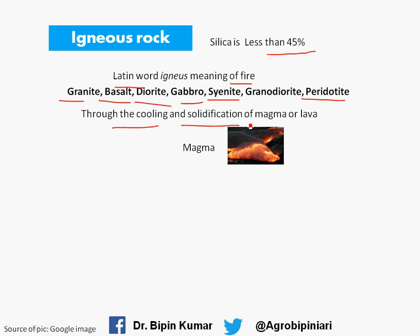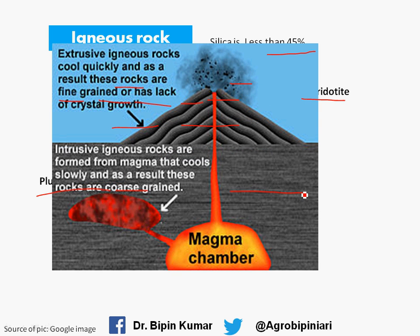When magma cools and solidifies, it forms igneous rocks. There are two types based on the position of formation. First is plutonic rocks, also called intrusive rocks, and the other is extrusive rocks. Magma formed underground comes out as lava, and this lava cools at the outer layer — that is why it is called extrusive igneous rocks. These rocks cool very quickly, so they are very fine-grained and lack crystal growth.